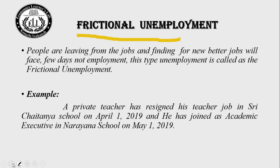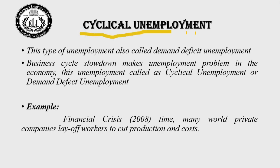Cyclical unemployment, also called demand deficit unemployment: business cycle slowdowns create unemployment in the economy. Unexpected interference in the economy causes the business cycle to slow down, resulting in people losing their jobs. For example, during a financial crisis, many world private companies laid off workers to cut production costs.